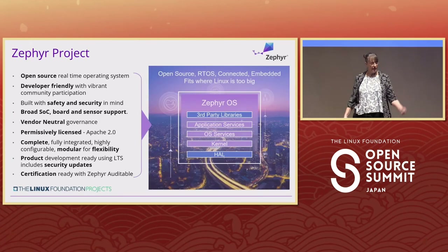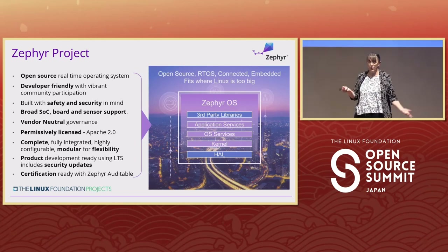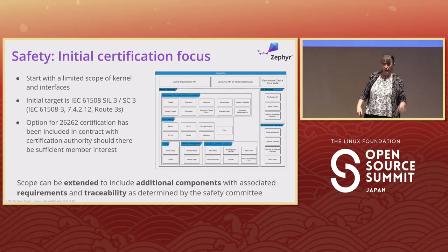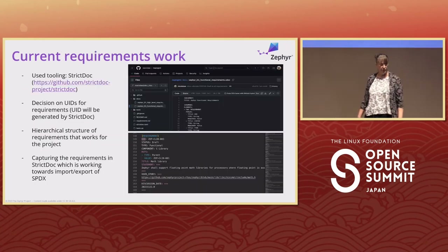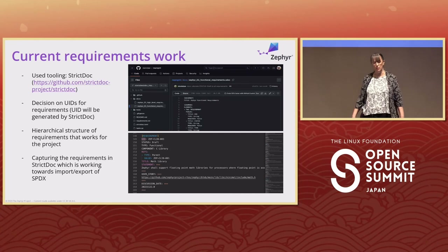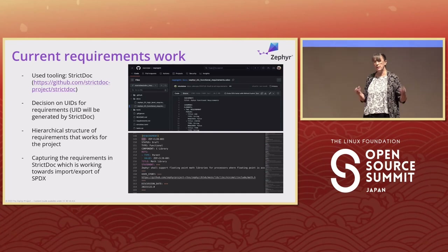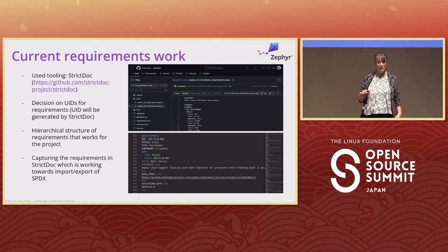The Zephyr project is participating here. For those who aren't familiar, Zephyr is an RTOS. We started off with safety and security for resource-constrained devices in mind from the very start. We have our initial certification focus — we're working with TÜV SÜD on getting IEC 61508 certification right now. We are also using Zephyr to prototype requirements traceability, using StrictDoc, another open source tool, to build the hierarchy of requirements and match it to the code. We're doing that exercise in Zephyr, which has a much smaller footprint than the Linux kernel.